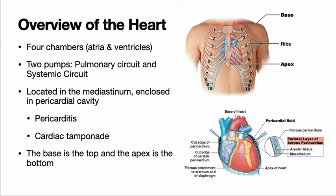The heart can be found in the mediastinum, which is one of the body cavities that you learned about in ANP1 lab. We can see it here in this diagram — you can see how the heart is behind the sternum, which acts to protect it, and then it leans a little to the left. It's roughly between ribs two and five and extending a little beyond on each of those.